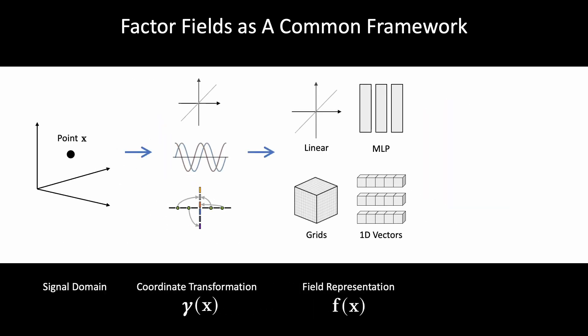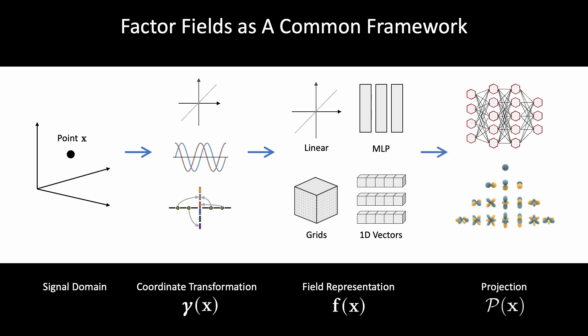To further represent multidimensional signals, we introduce the projection function P that maps from the k-dimensional field outputs to the q-dimensional target signal. In particular, we consider MLPs and spherical harmonics.